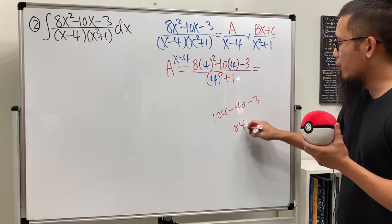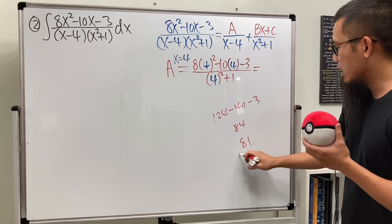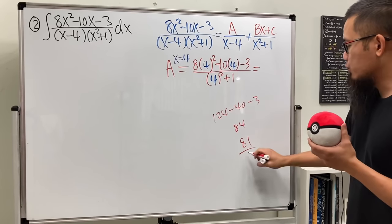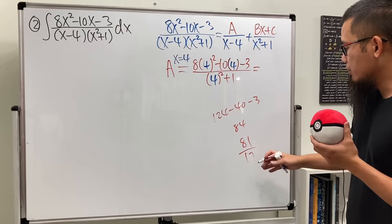So that's going to be 84 minus 2, which is 81. And then on the bottom we have 16 plus 1, which is 17. And if you look at this...